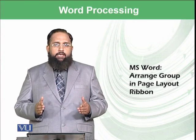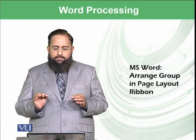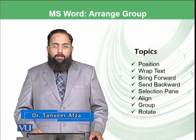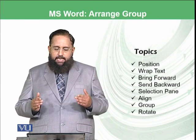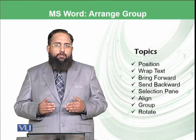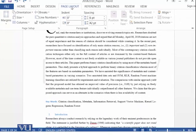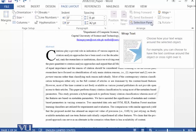Dear students, we were discussing the Page Layout ribbon and today we will be focusing on the last module in this category — the Arrange group available in the Page Layout ribbon. In the Arrange group we have these options: Position, Wrap Text, Bring Forward, Send Backward, Selection Pane, Align, Group, and Rotate. We have already discussed the Page Setup group and Paragraph group in the last modules.